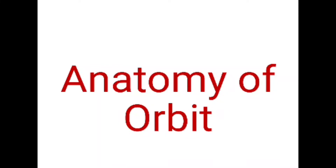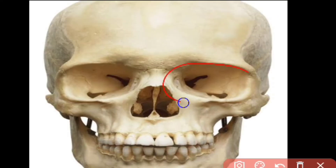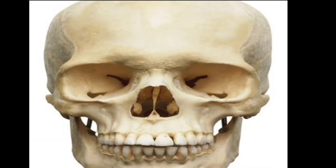Hello everyone, welcome back to my YouTube channel — Dr. Barkis Ophthalmology Tutorials. Today we will discuss the anatomy of the orbit. The orbital cavities can be defined as triangular truncated bony cavities, or the sockets of the skull, in which the eye and its appendages are situated.